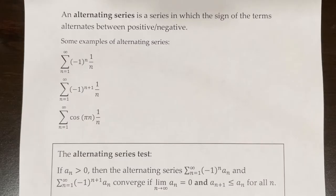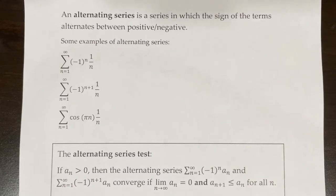Welcome to lesson 10.7. In this video, we will be exploring alternating series. An alternating series is a series in which the sign of the terms alternates between positive and negative.